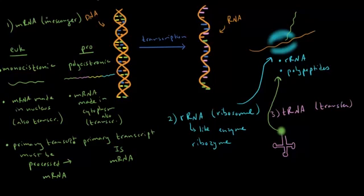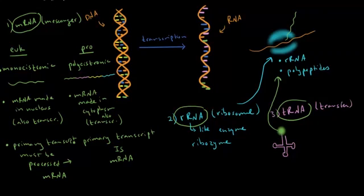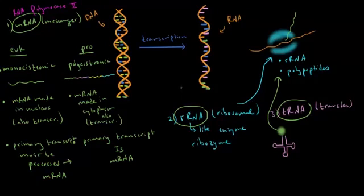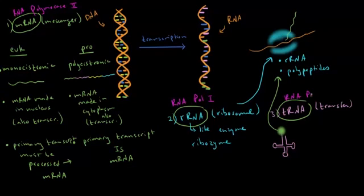To recap, we discussed messenger RNA, ribosomal RNA, and transfer RNA. In eukaryotic cells, mRNA is synthesized by RNA polymerase 2, ribosomal RNA by RNA polymerase 1, and transfer RNA by RNA polymerase 3.